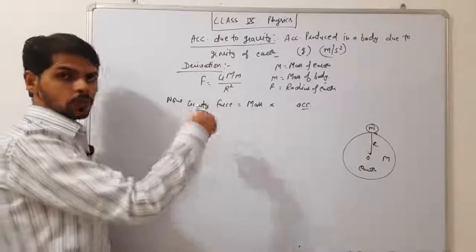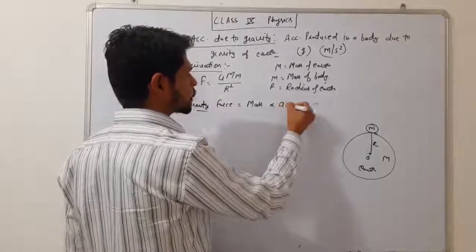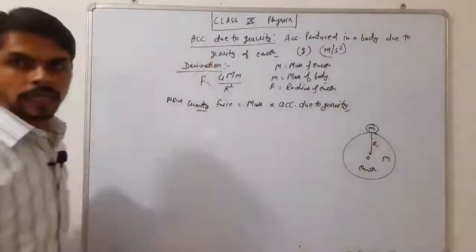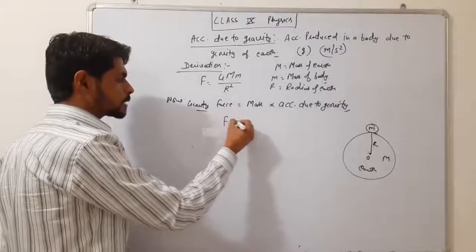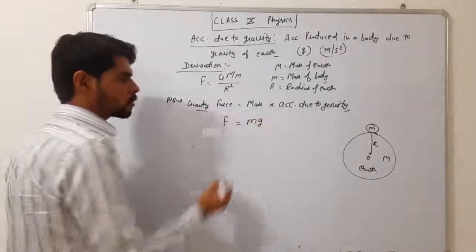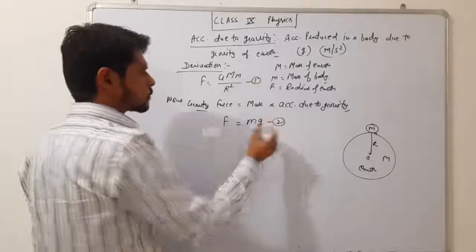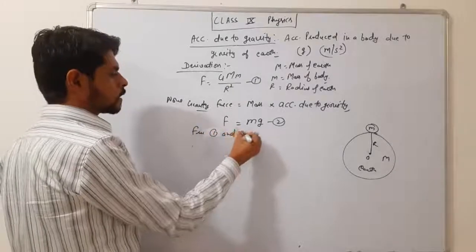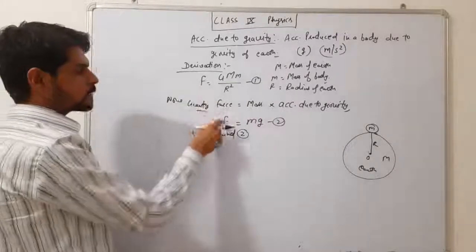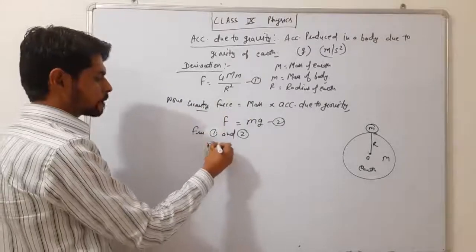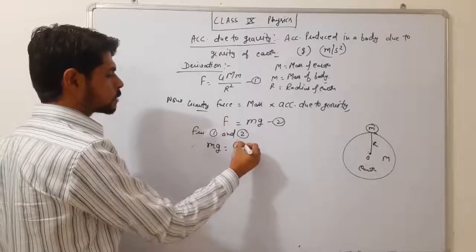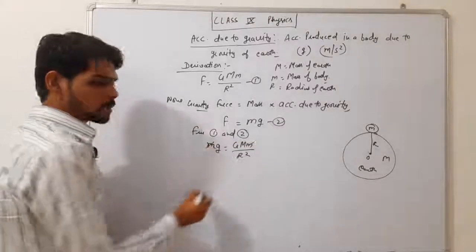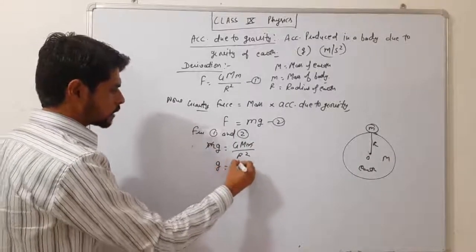If force is gravity, then the corresponding acceleration is acceleration due to gravity. So gravity force F = m × g (equation 1), and gravitational force F = G × M × m / R² (equation 2). From equations 1 and 2, left-hand sides are equal, so mg = G×M×m / R². Cancelling m from both sides: g = G×M / R².